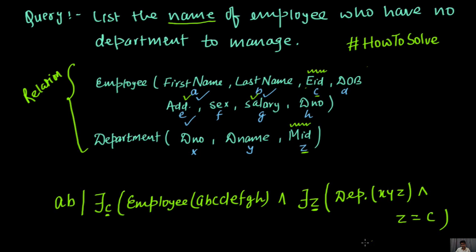And z equal to c. Fine. So this is our whole domain relational query for the given above query.